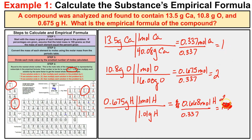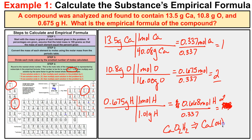So we end up with Ca(1) — or simply Ca — O2, and H2. This gives us CaO2H2, which can be rewritten as calcium hydroxide. That is our empirical formula for this compound.